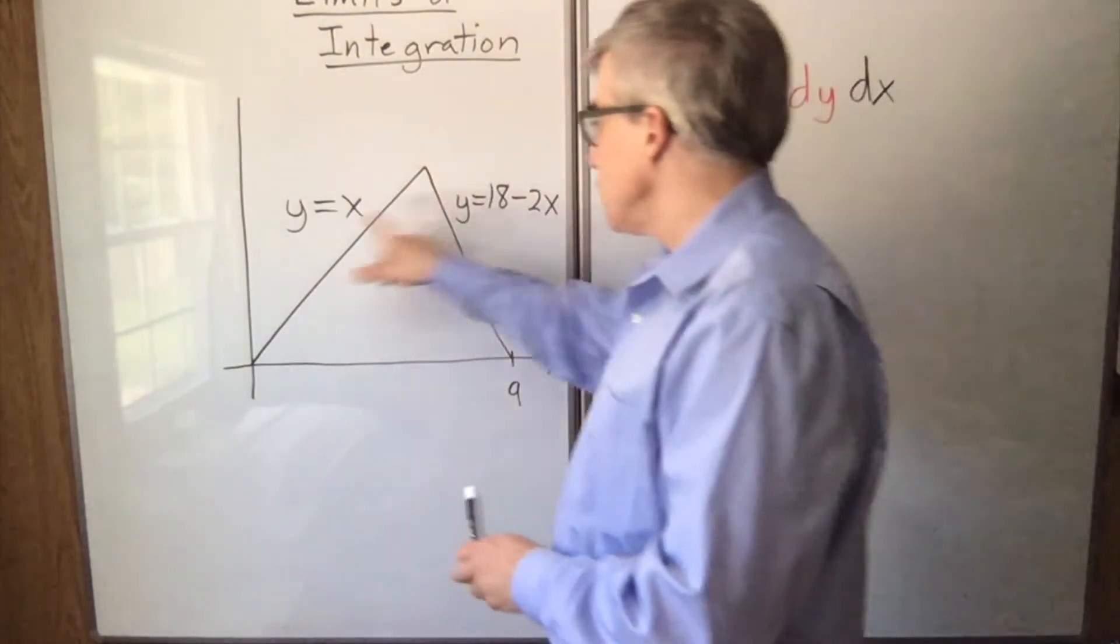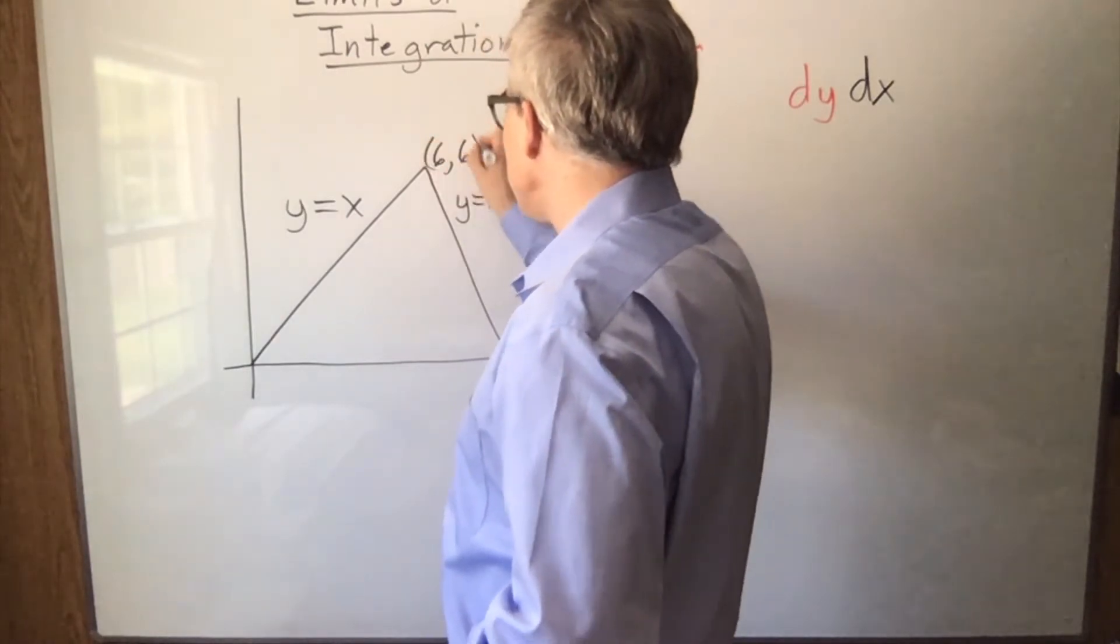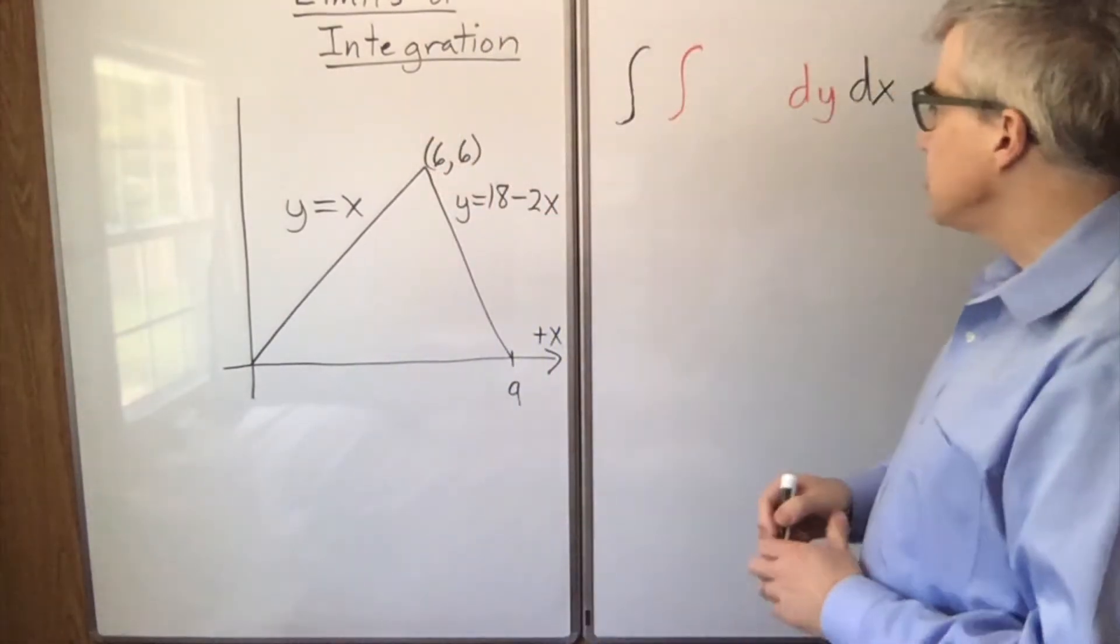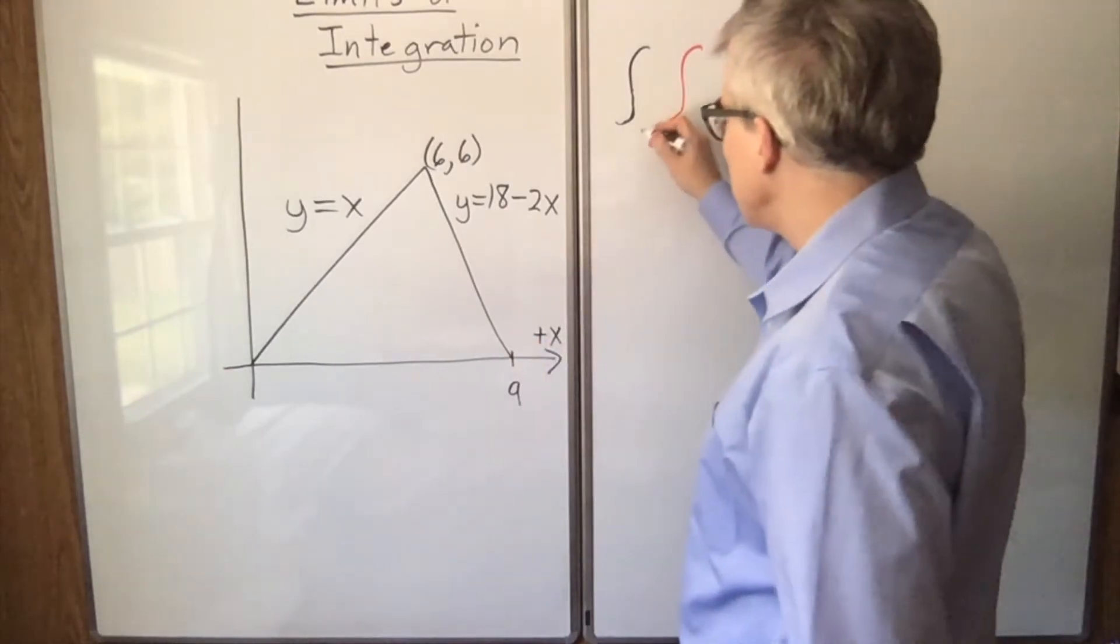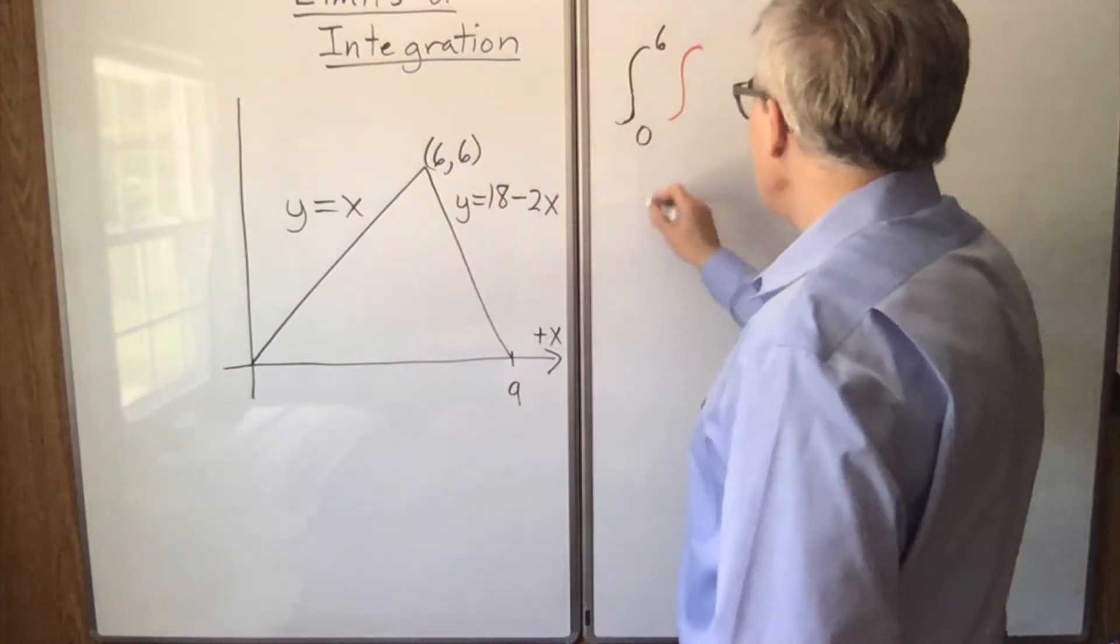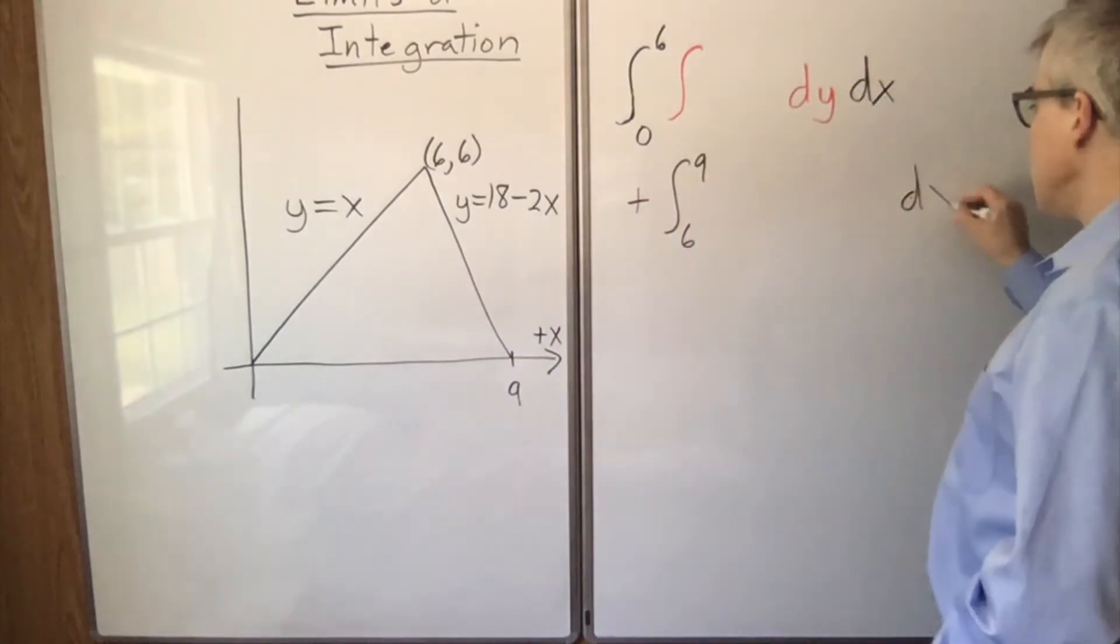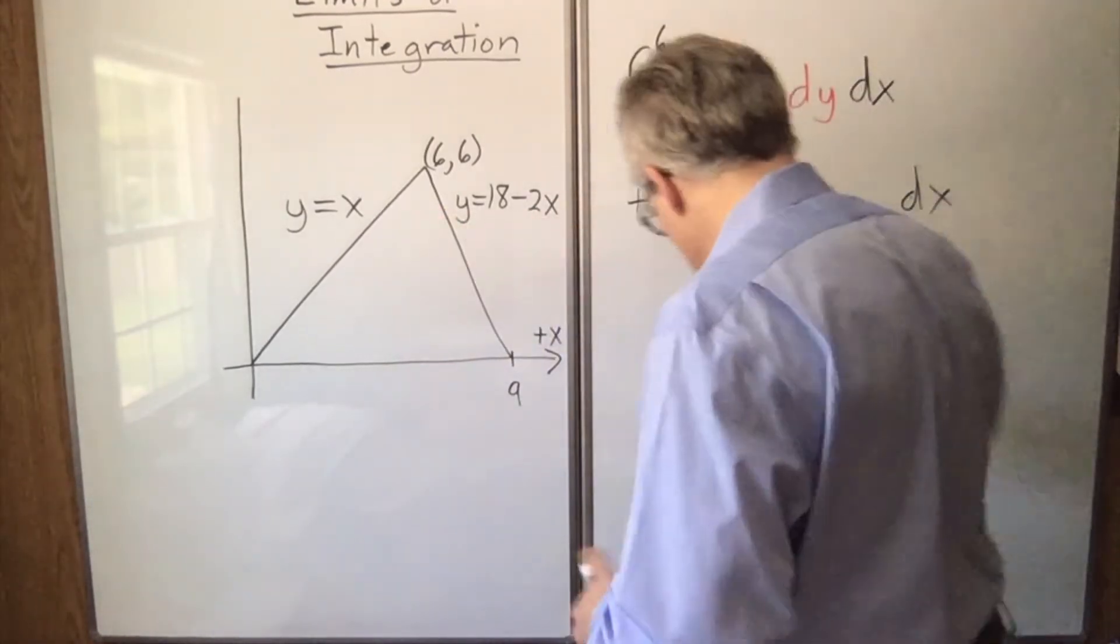Now if you solve these two equations, you find out that this is the point 6, 6. And so what happens is you have to integrate x from 0 to 6 with one upper function, and then you have to integrate from 6 to 9 for the rest of it.